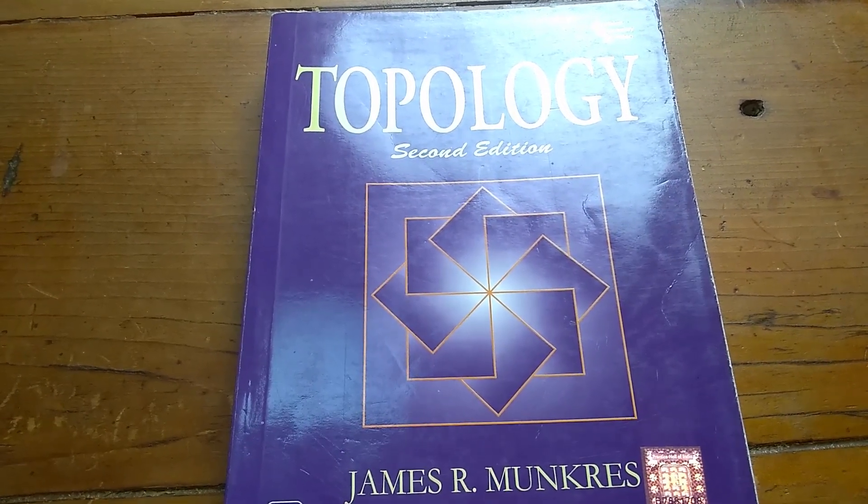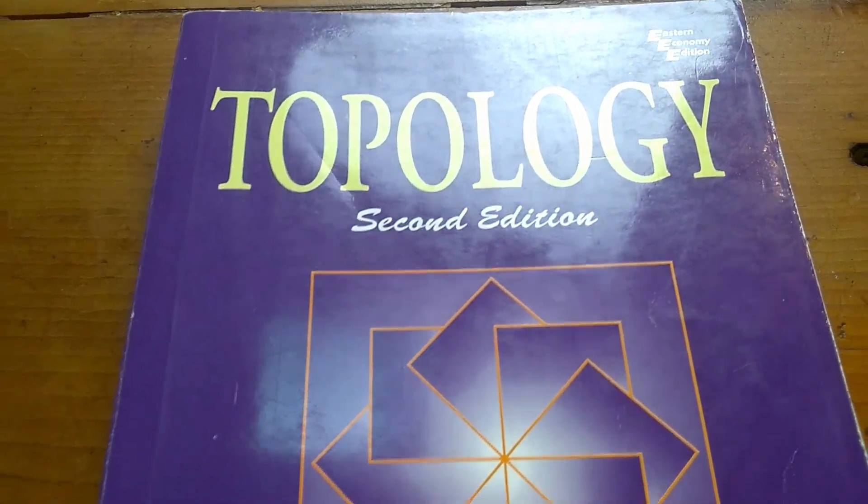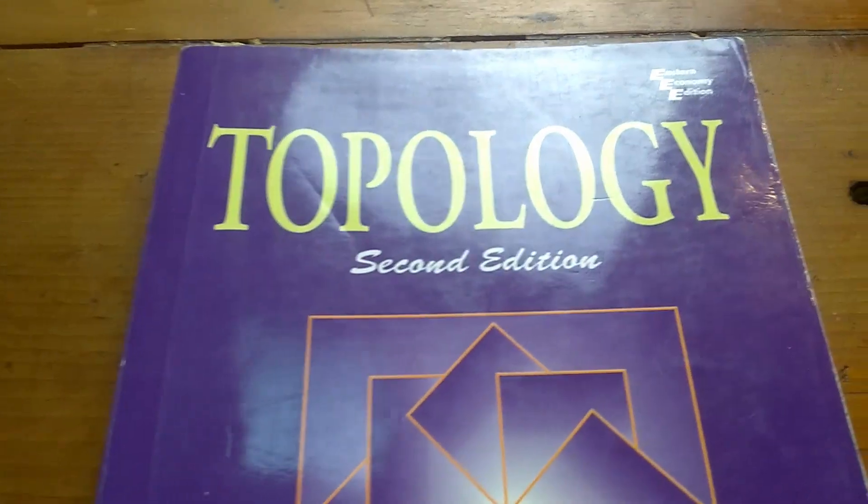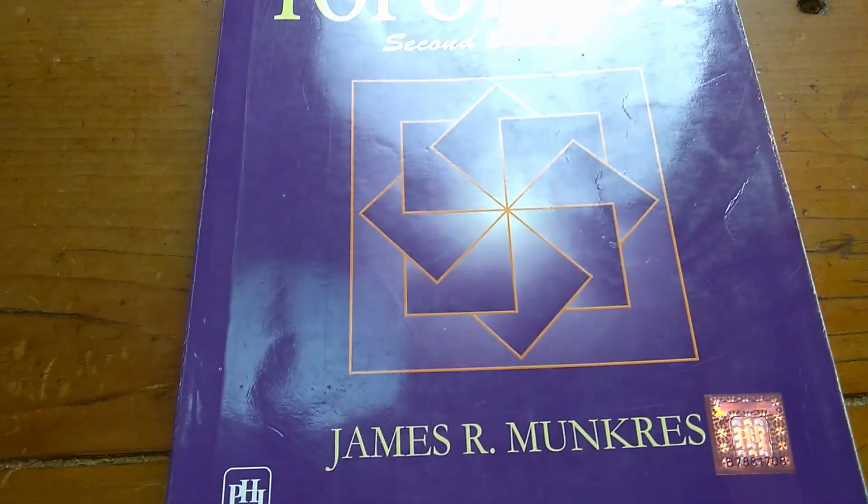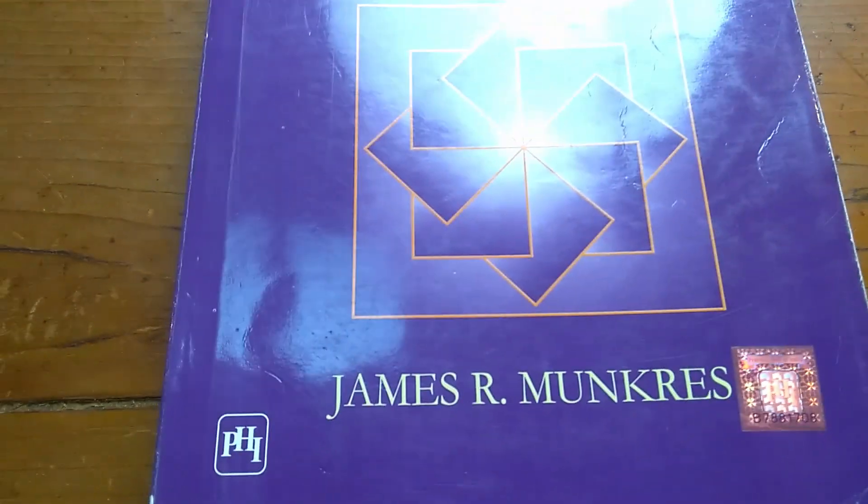Okay, in this video we're going to talk about the most popular topology book in existence, at least in the U.S. This is Topology, second edition, and it's written by James R., and I think it's Munkres. I think that's how you say his last name.